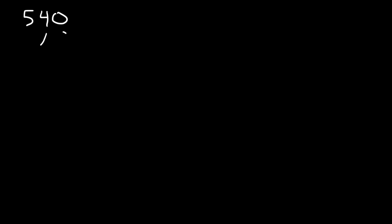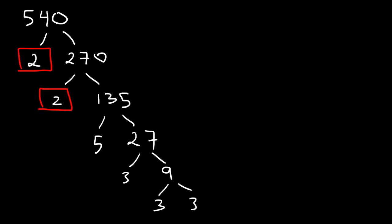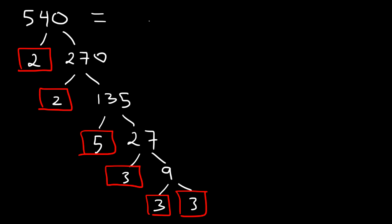Now write the prime factorization of 540 using the factor tree method. Since it ends in 0 it's even, so divide by 2: 540 divided by 2 is 270. Divide by 2 again: 135. One-thirty-five is odd and ends in 5, so divide by 5: 135 divided by 5 is 27. Twenty-seven divided by 3 is 9, and 9 is 3 times 3. So 540 is 2 times 2 times 3 times 3 times 3 times 5.